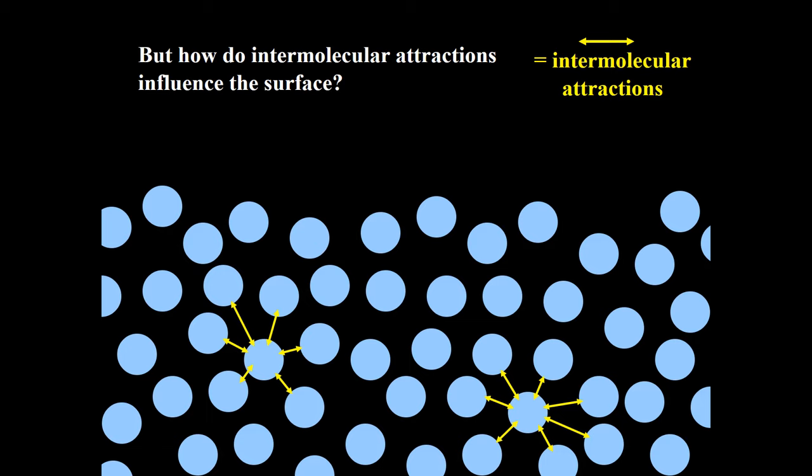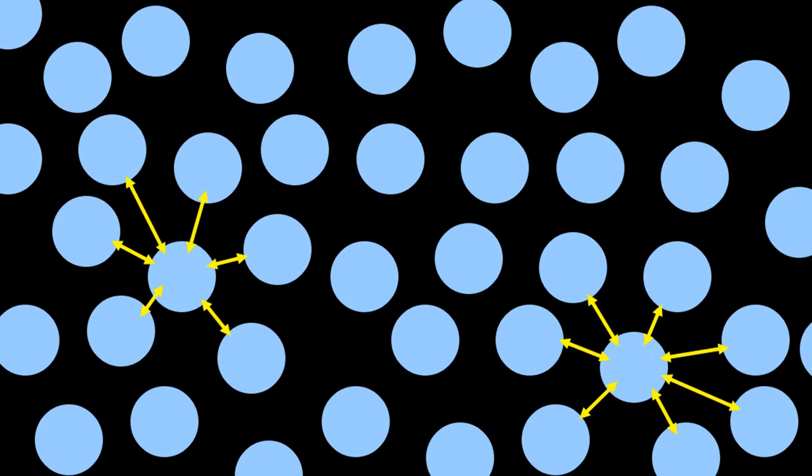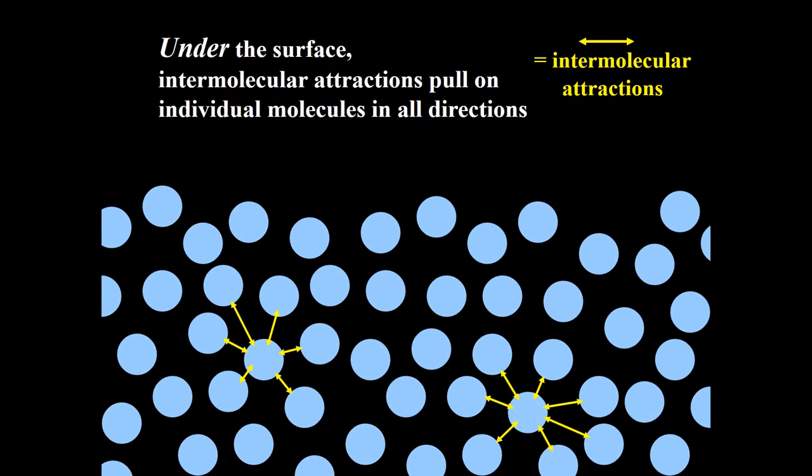But what we should find out is how do intermolecular attractions influence the surface? First let's look at intermolecular forces under the surface, where attractions of individual molecules pull on each other in all directions.